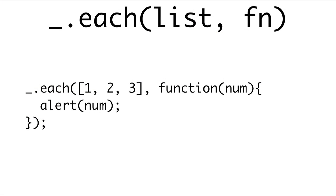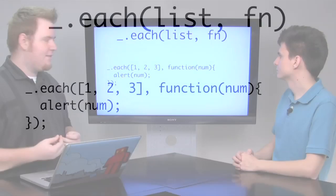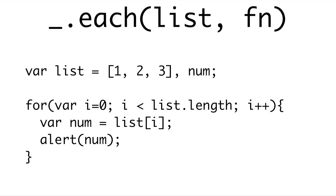There are way too many methods to cover all at once, but let's look at a few. The first is a method called each. Each is a property of the Underscore object, and it takes two arguments: the first is a list, and the second is a function. What each does is take every element in your list, call the function, and pass that element in. For instance, calling each on one, two, three with an alert will produce three alert boxes — one, two, and three. You simply call underscore.each, passing the list and a function, and it will execute. This is another, cleaner way to write a basic for loop.